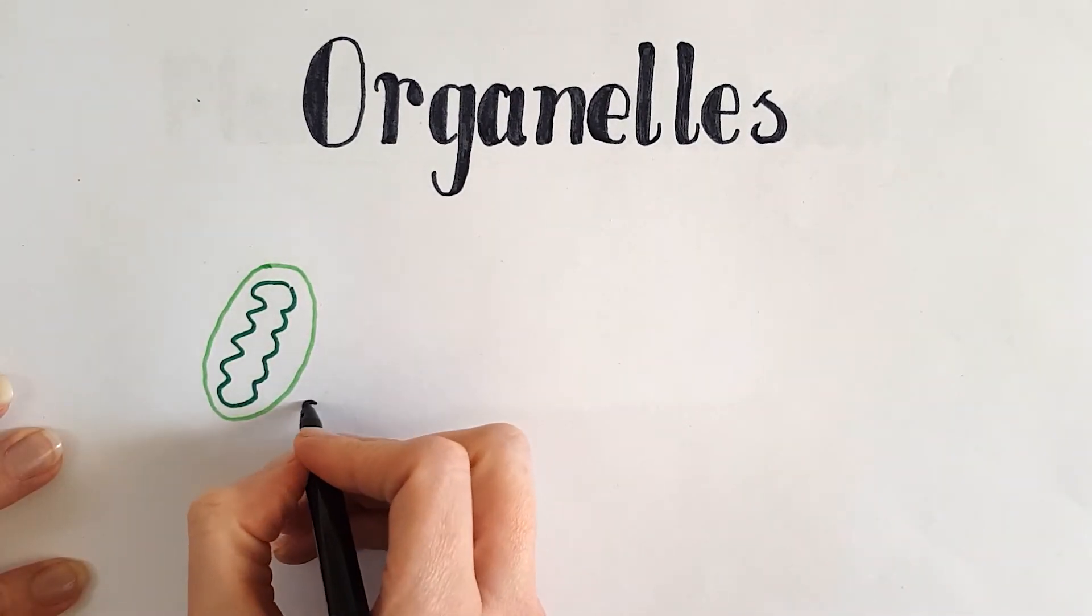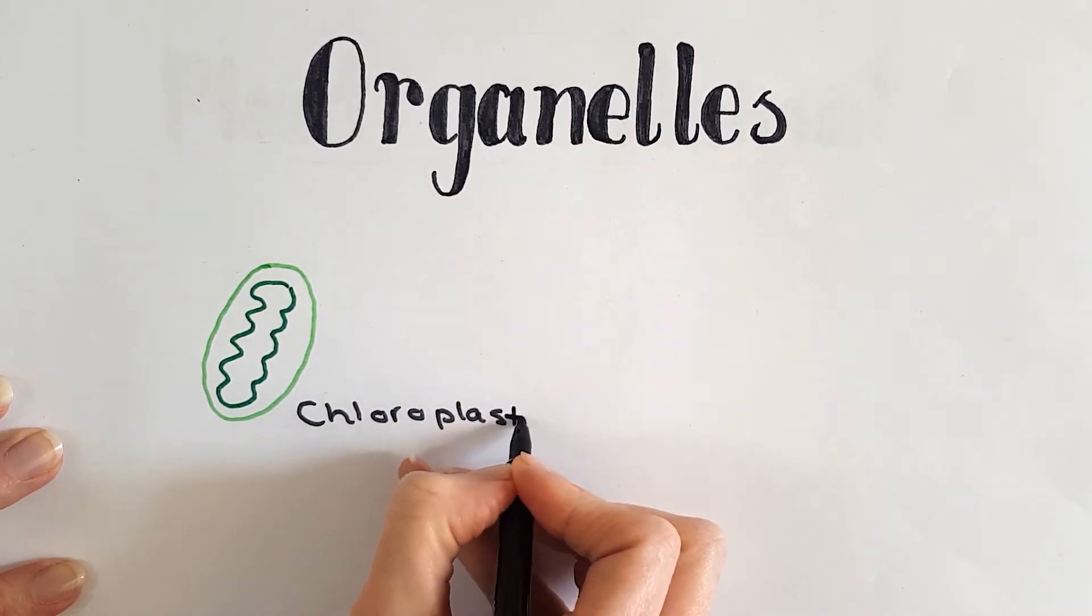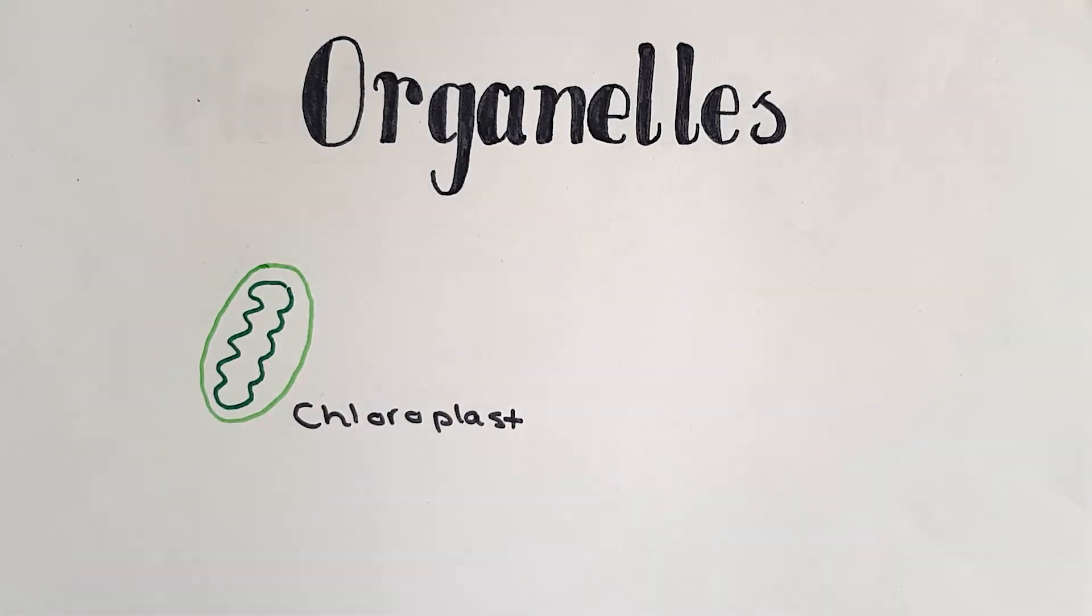This is the chloroplast. Chloroplast contains a green pigment, which is why it's this green colour. This green pigment is called chlorophyll, and this is where photosynthesis occurs. Photosynthesis is the process where plants take energy from the sun to make sugar.